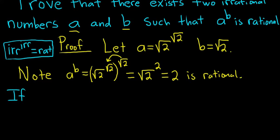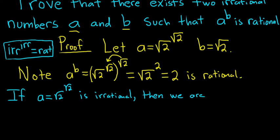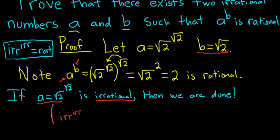Case 1: suppose a, which equals the square root of 2 to the square root of 2, is irrational. If it is irrational, then we are done. Because then we have a to the b where a is irrational, and b is the square root of 2 which is also irrational. So we have irrational to the irrational equal to 2, which is rational. So if the square root of 2 to the square root of 2 is irrational, we have irrational to irrational equal to rational — and we're done.